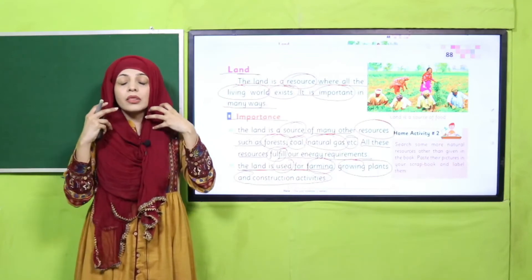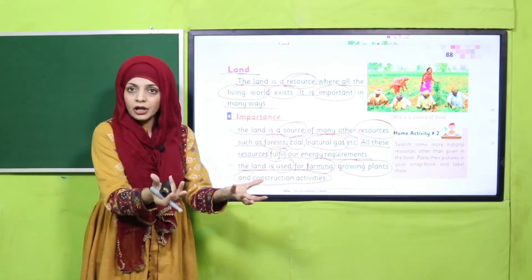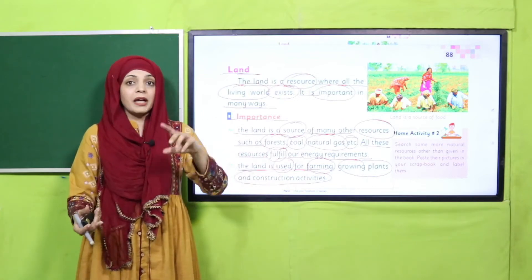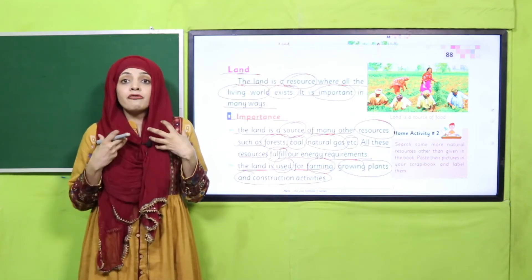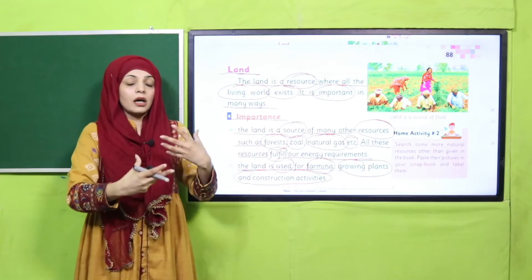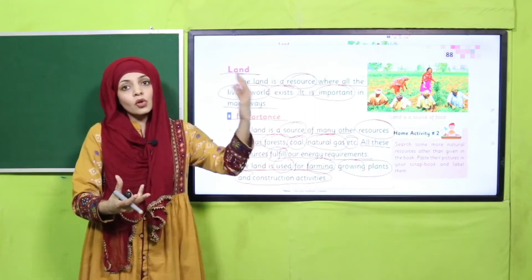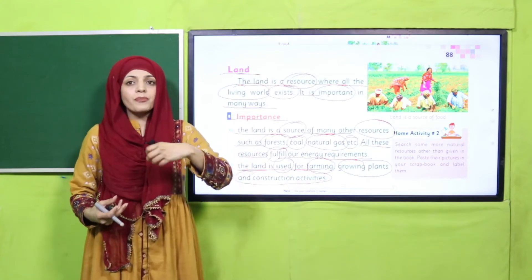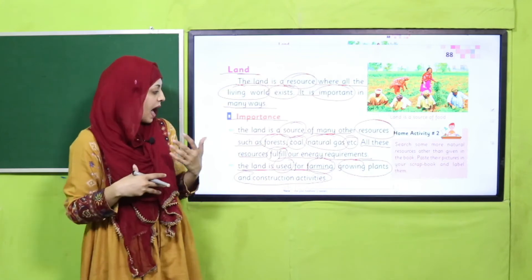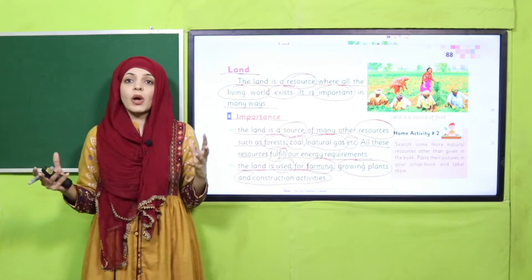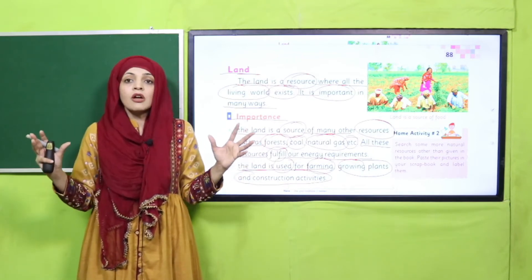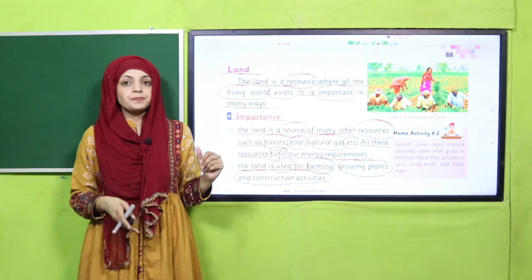My dear students, from land we are getting a lot of things. We get coal for energy, we get gas for energy which we burn in our homes, we get food for energy — the food we eat is also coming from the land. Crops, vegetables, fruits — everything is coming from the land. And we construct many things on land. So we are getting a lot of resources from the land.